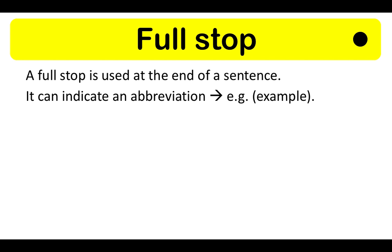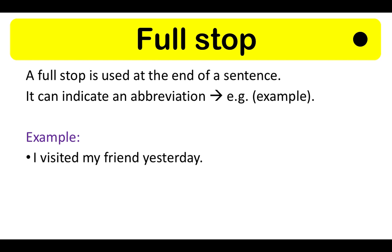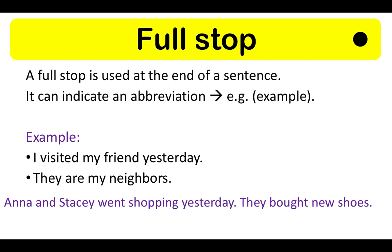Some examples of a full stop used in a sentence include: 'I visited my friend yesterday.' and 'They are my neighbours.' As you can see in both of these examples, the full stop is at the end of the sentence. In the next example, 'Anna and Stacey went shopping yesterday. They bought new shoes.' — we have two independent sentences with no conjunction, comma or semicolon. Therefore a full stop is required.